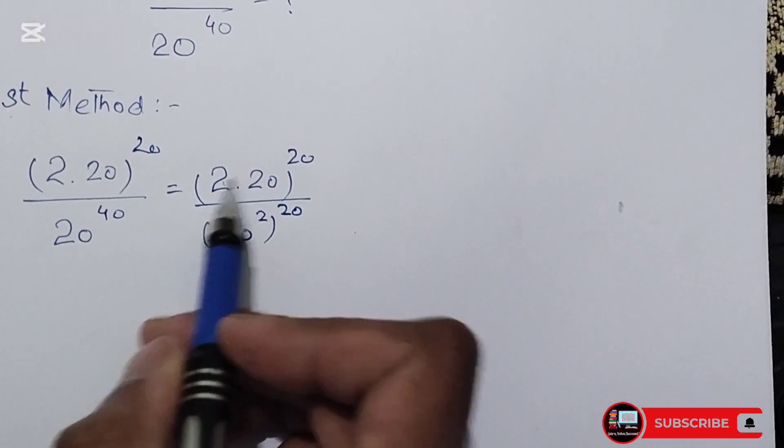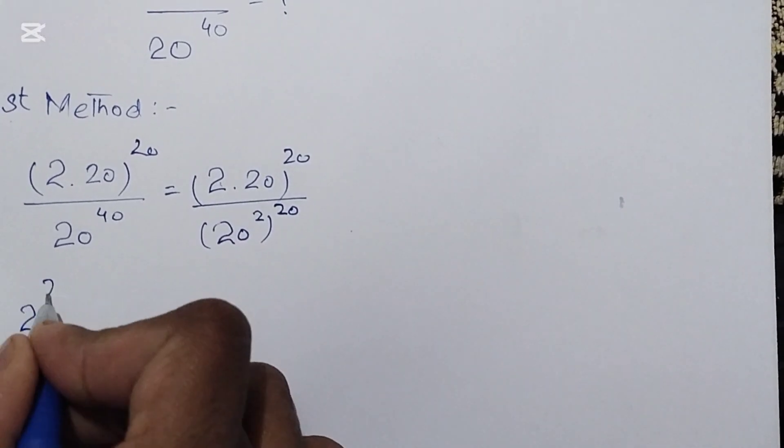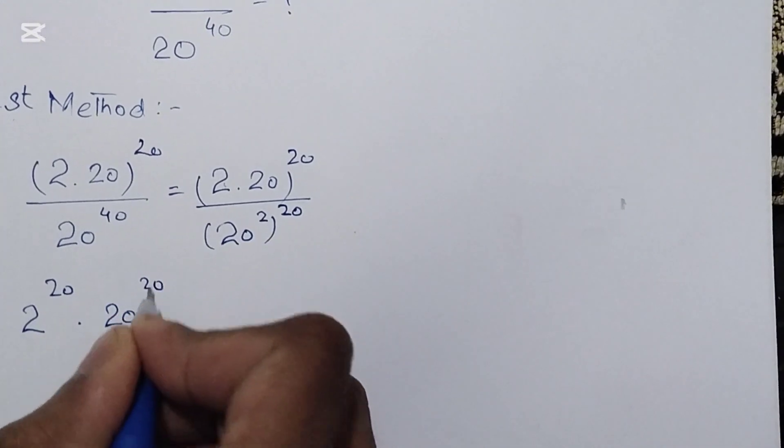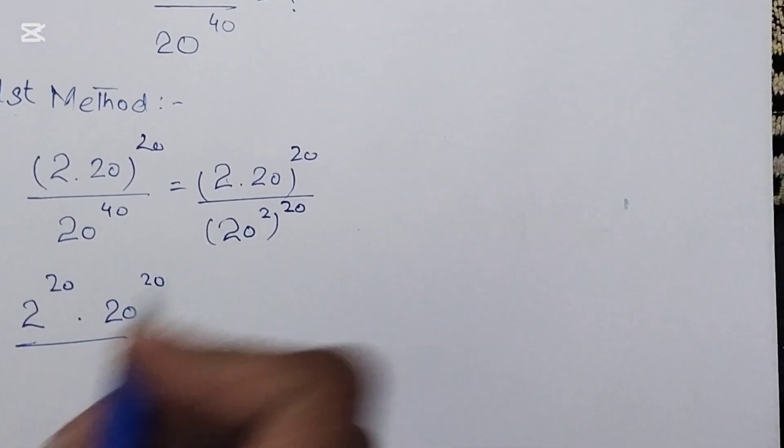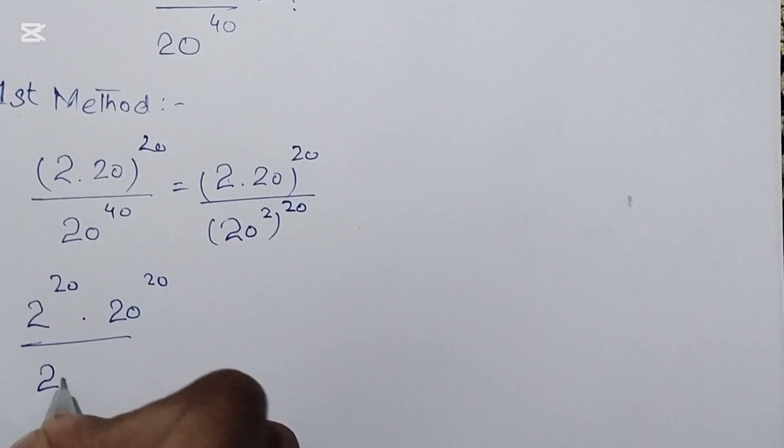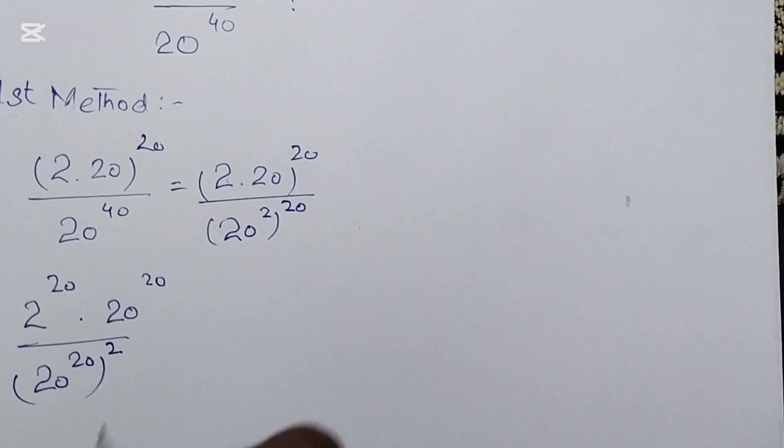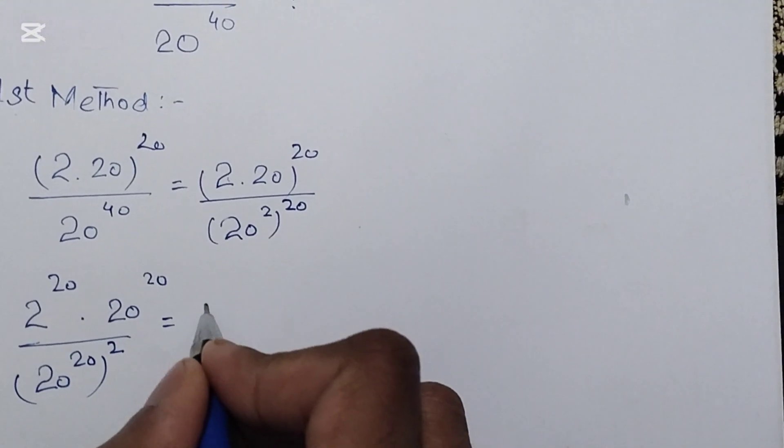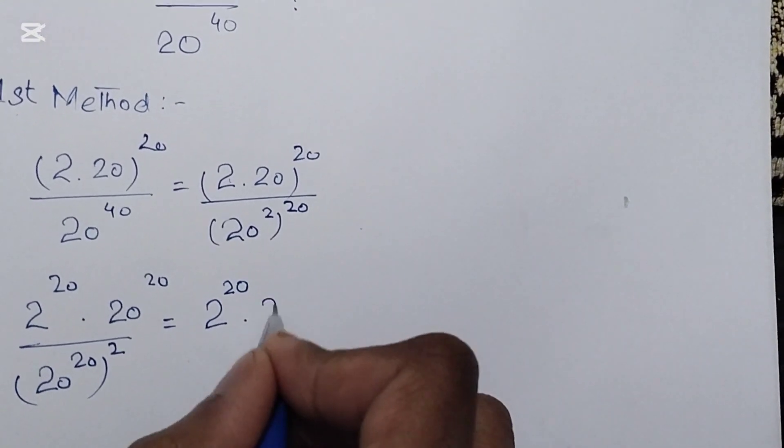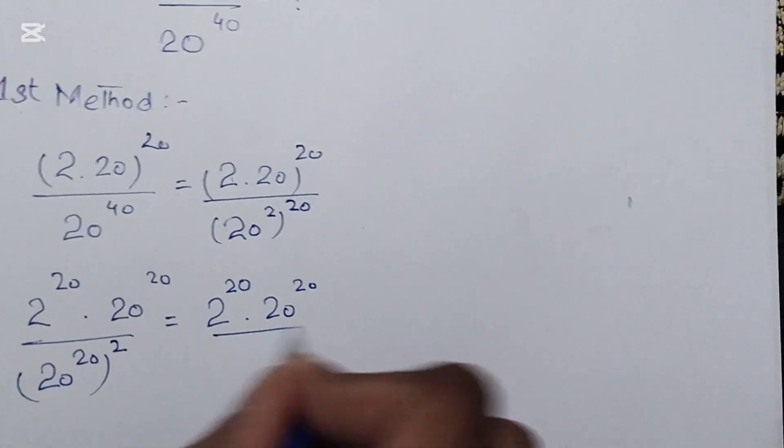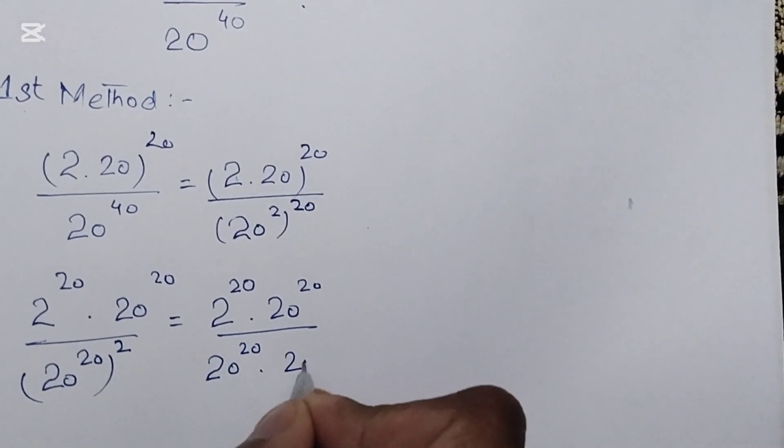The power will be with both terms. We can write 2^20 times 20^20 over 20^20 whole squared. The numerator can be written as 2^20 times 20^20, over the squared denominator, which means 20^20 times 20^20.